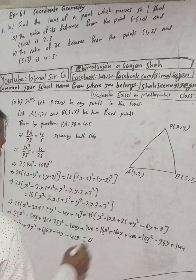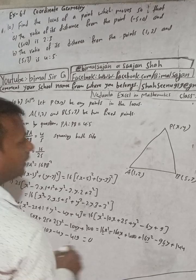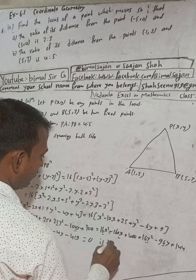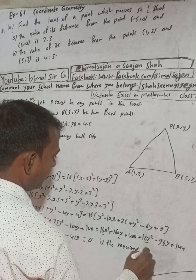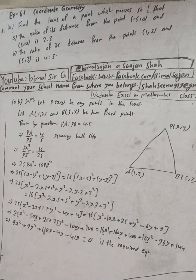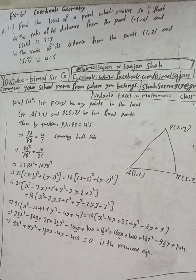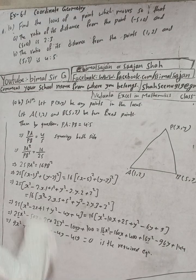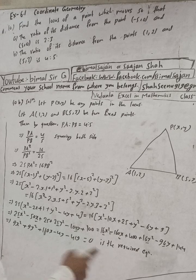This is the required equation. In the book they have taken -419 to the other side, so it becomes 9x² + 9y² + 110x - 4y = 419.